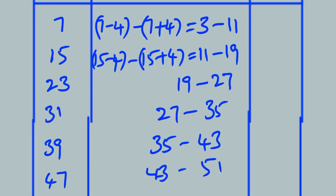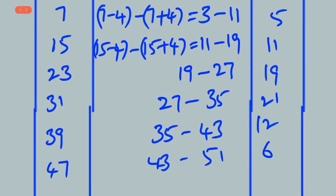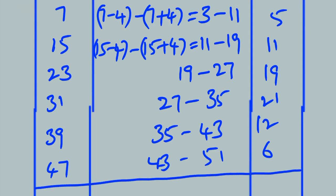And 47 minus 4 is 43, 47 plus 4 is 51, giving 43 to 51. The frequencies already given in the question are 5, 11, 19, 21, 12, and 6. This is the required distribution table, showing how to find class intervals when only class marks are known.